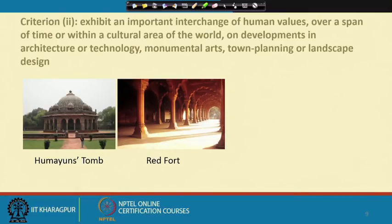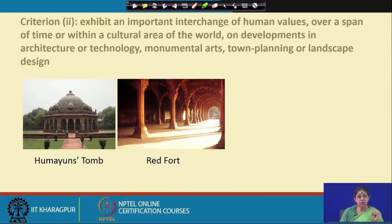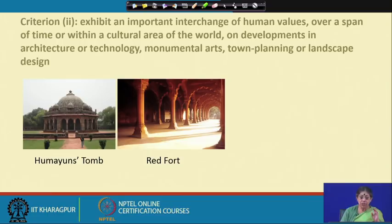Criteria two: it exhibits an important interchange of human values over a span of time or within a cultural area of the world on developments in architecture and technology, monumental arts, town planning, and landscape. Humayun's Tomb also comes under that category, and the Red Fort in Delhi also comes under this category.